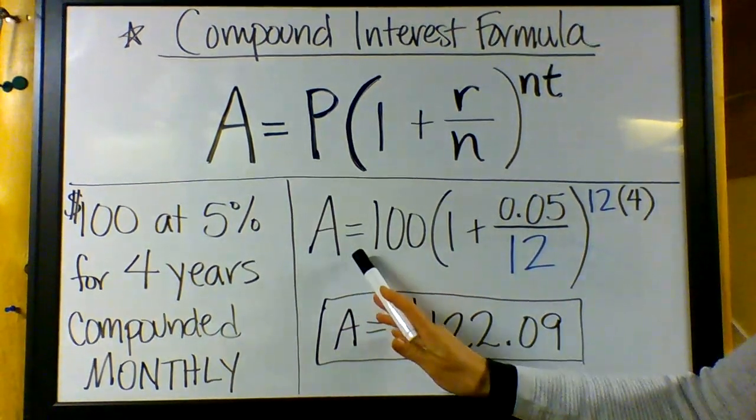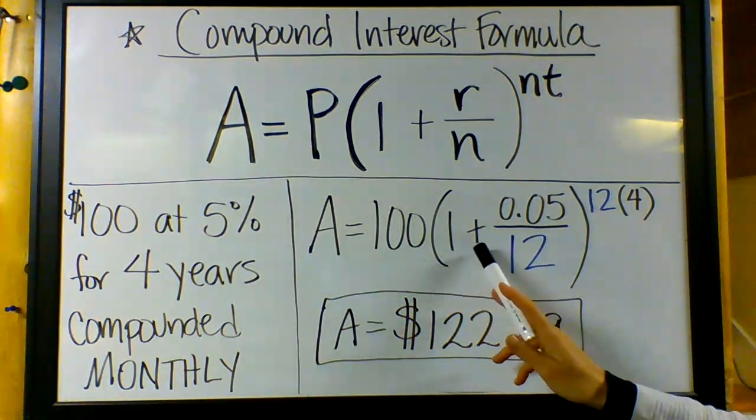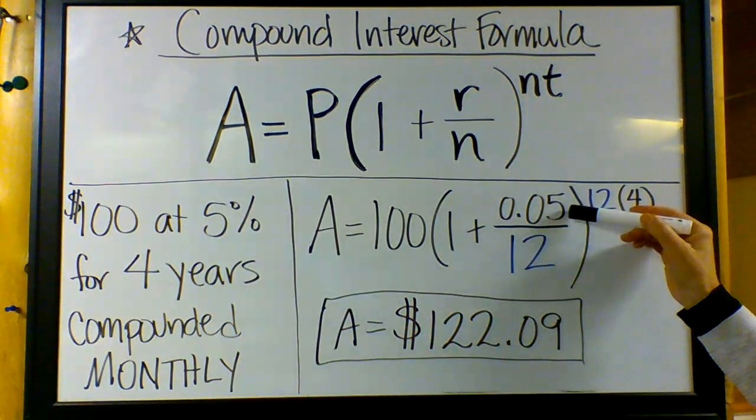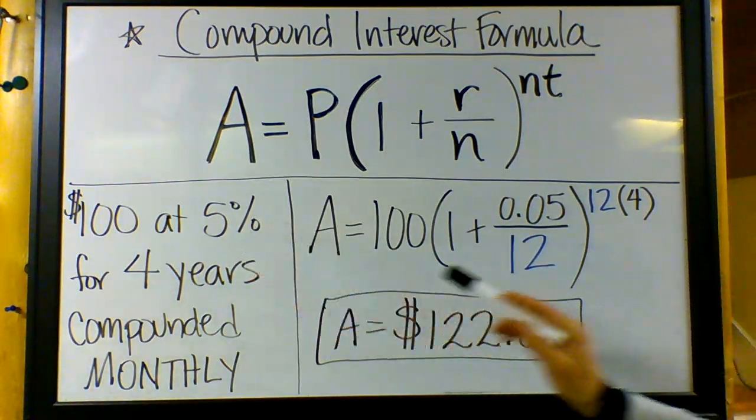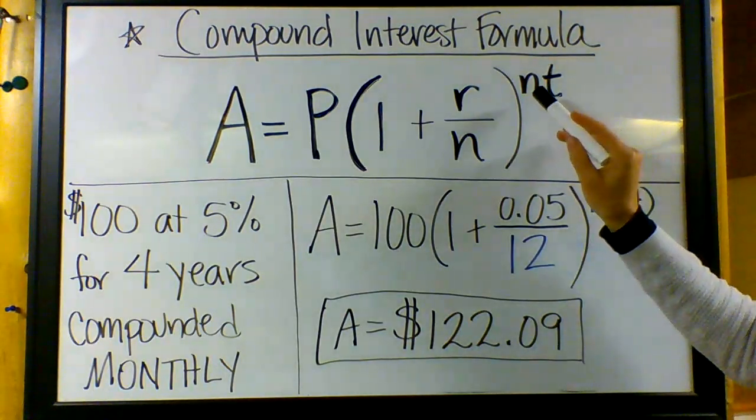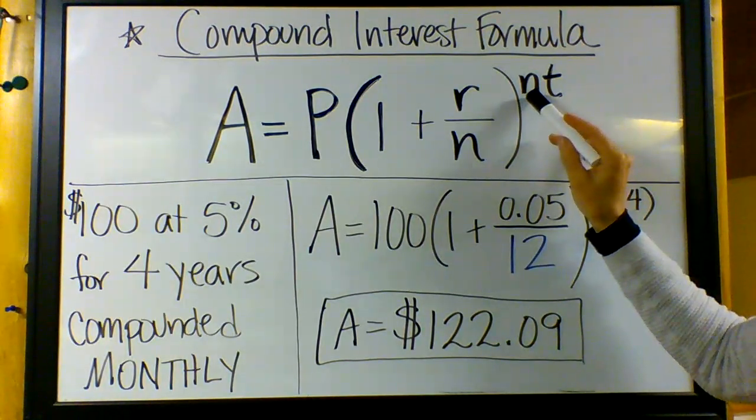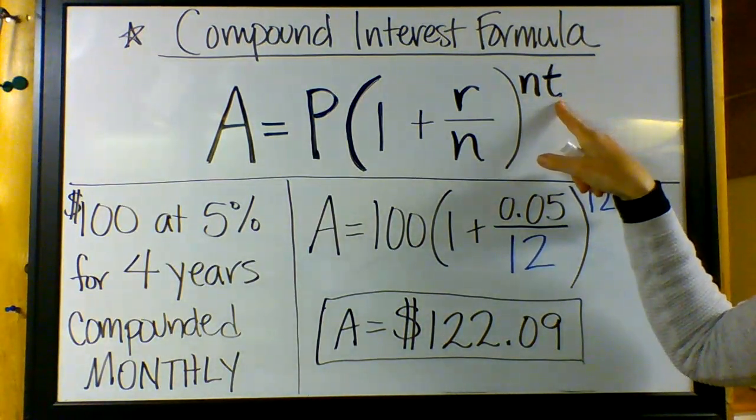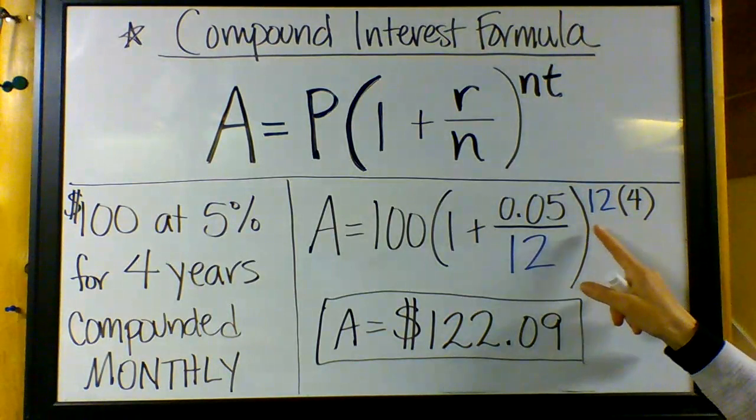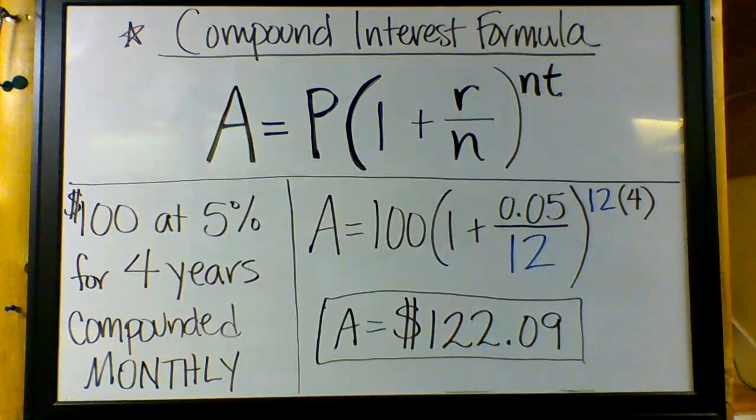So let's write out our formula: A equals 100 times 1 plus 0.05, which is the interest rate as a decimal, divided by 12 for 12 months in a year. And then this is to the nt, meaning we need to do this 12 times per year times the number of years. So that's going to be 12 times 4 in this case, 48.